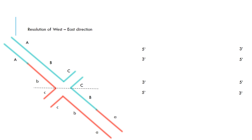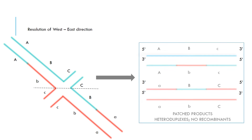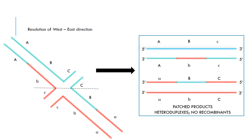If resolved in the west to east direction, we receive patch products. This means there is no crossing over, but we still have heteroduplexes in the B genes present.